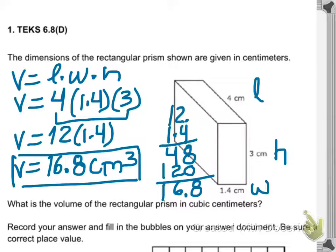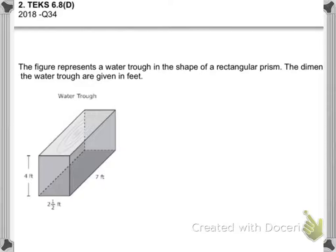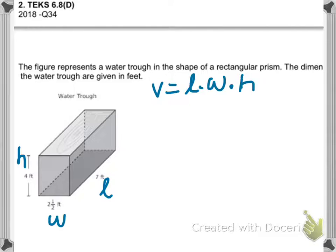This is another problem — question number two. You need to find the volume of that shape, which is a water trough. Label the dimensions: length is seven feet, width is two and a half feet, and height is four feet. Write the formula: length times width times height.